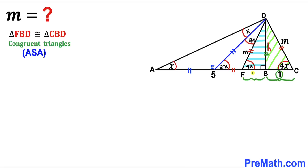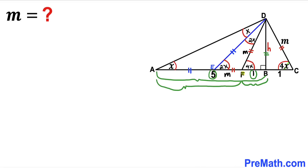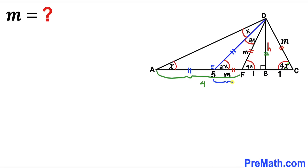If this side length CD is M, then side length FD is M as well, and moreover this side length is M as well. Side lengths BC and FB are congruent — if BC is 1, then FB is 1 unit as well. We can see that AB is 5 and FB is 1, so side length AF is 5 minus 1, which gives us 4. Moreover, we know that side length AF is M.